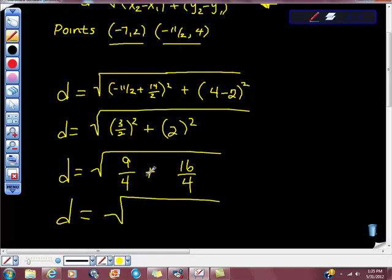because 9 fourths plus 16 fourths equals 25 fourths, and of course we know that 25—whoops, did I say sixteenths?